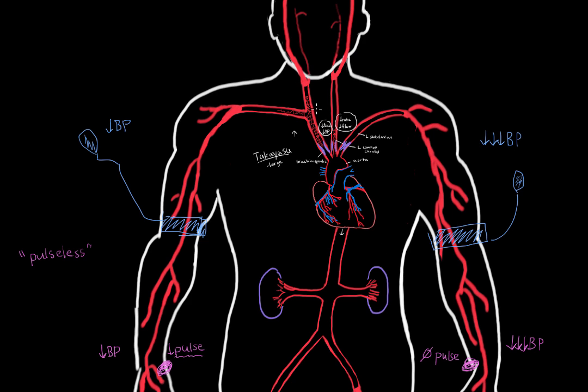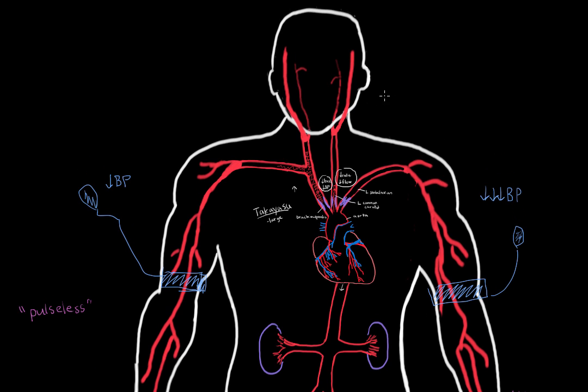Now let's think about the common carotid arteries, the right and the left common carotids. If there's narrowing of these arteries, you see decreased blood flow to the brain. And this may result in vision and neuro problems.